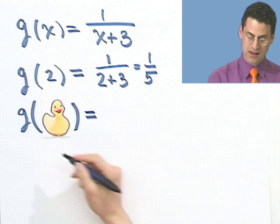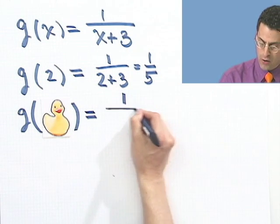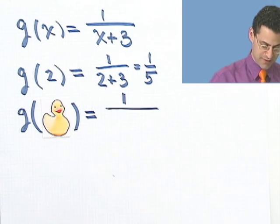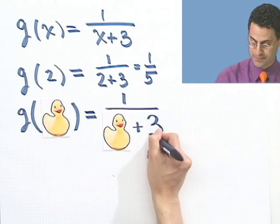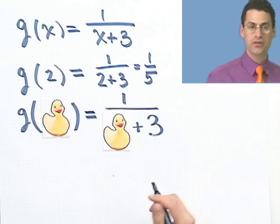Well, it doesn't make a difference what I put in here. Whatever I put in here, I'm just going to replace all the appearances of x by that thing. So in this case, I see 1 over rubber ducky. Whoops, sorry about that. Rubber ducky plus 3. You see, it's really just a substitution.